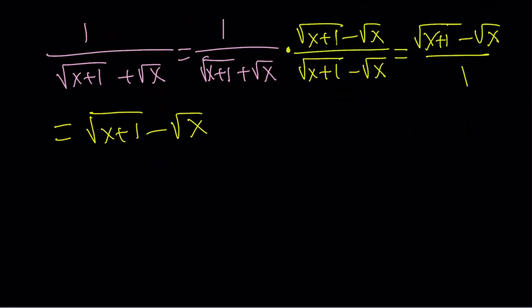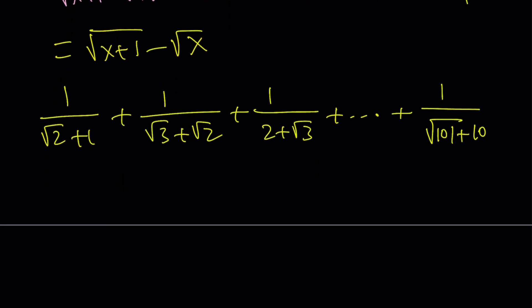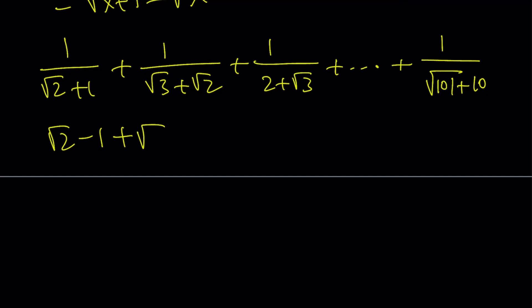Now here's what our sum looks like. We have 1 over square root of 2 plus 1, plus 1 over square root of 3 plus square root of 2, plus 1 over 2 plus square root of 3, all the way up to 1 over square root of 101 plus 10. When we multiply each term by its conjugate, we get square root of 2 minus 1, plus square root of 3 minus square root of 2, plus 2 minus square root of 3, all the way up to square root of 101 minus 10.